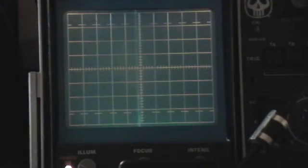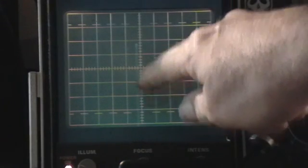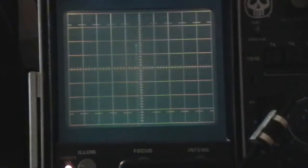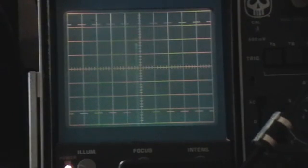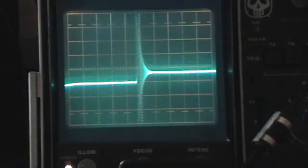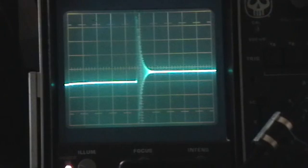That is 1, 2, 3, 4, 5, 6, 7, 8, 9, 10, 11 major divisions at 5 volts per division. That's 55 volts at least in that spike there with a nice ring down. There's a lot of power in that.